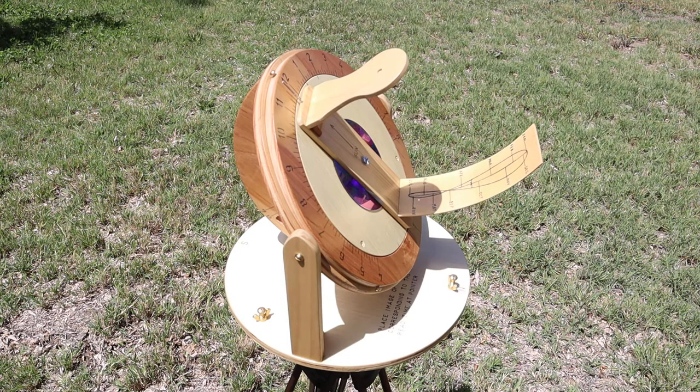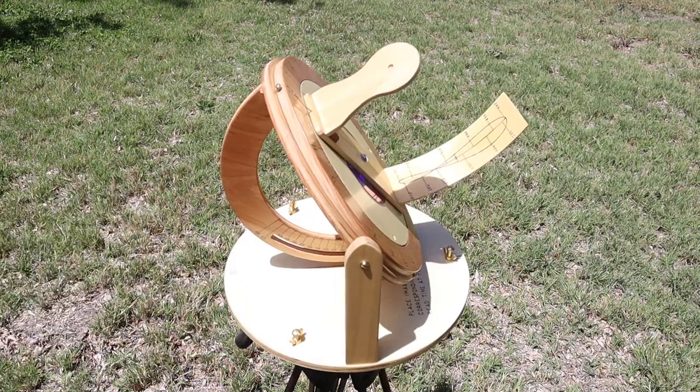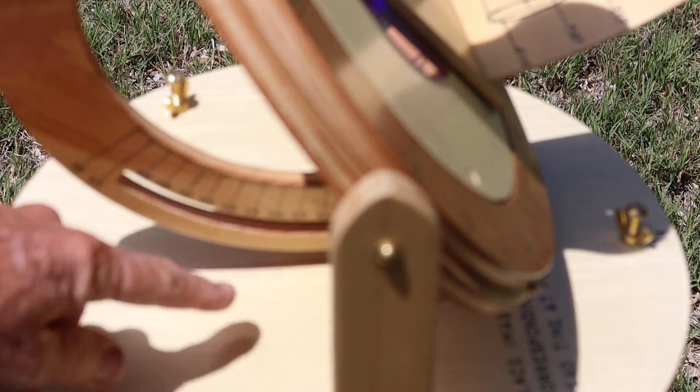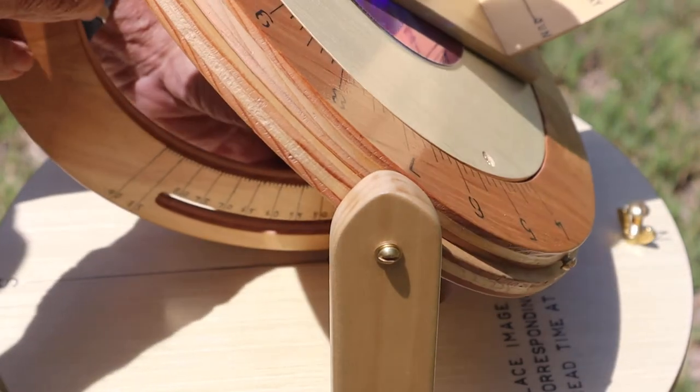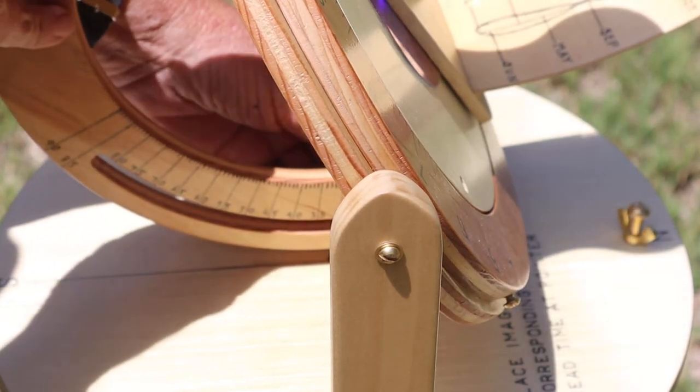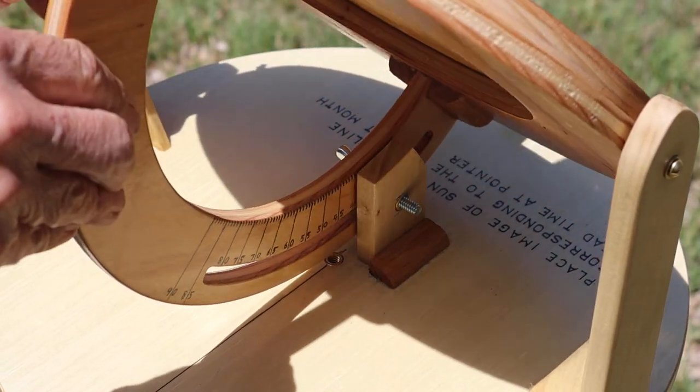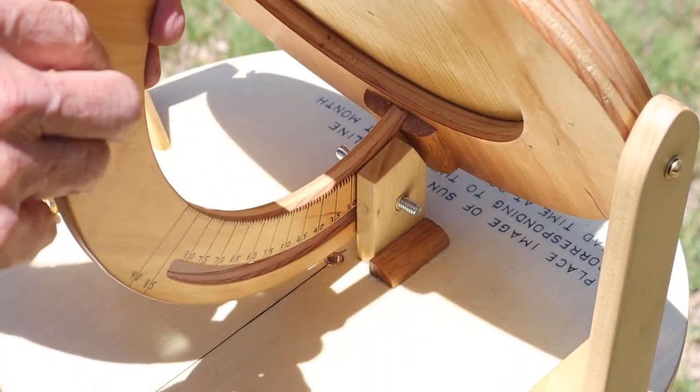And the second thing you do is you set it up. I'll show there's a little scale here at the bottom, hopefully you can see that, I'll try to zoom in on it. And this gives me my degrees of latitude. It has to be set up to the right degrees of latitude in order to work right. And so this is adjustable up and down, so you can see how that works. I'll swing it on around so you can get a little idea of the back side of it. And so you just adjust this to the proper degrees of latitude where you're at.